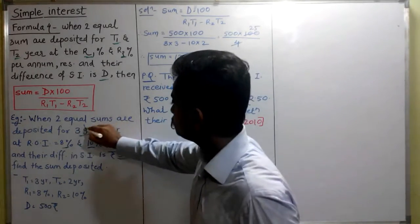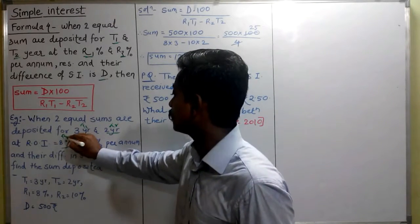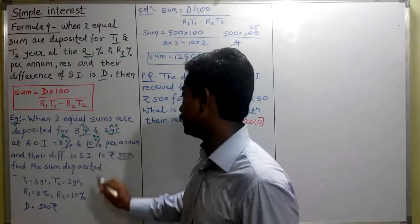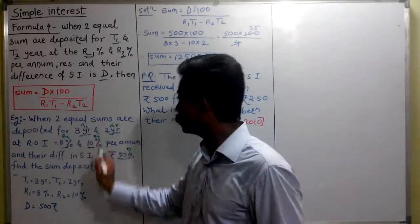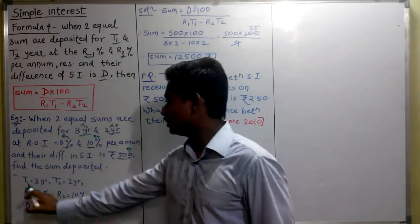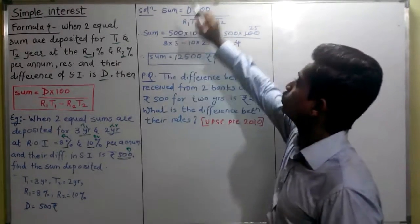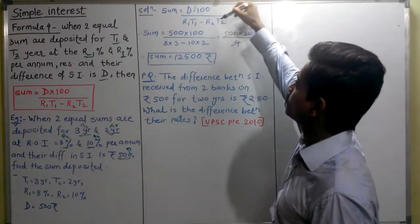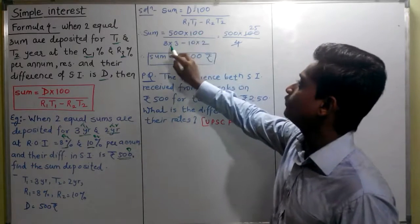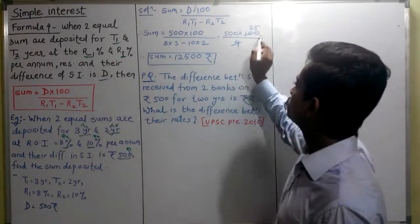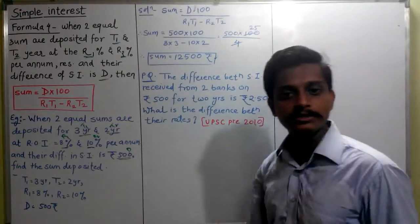What is given in the question? 3 years, 2 years, that is T1, T2. Rate of interest R1, R2. And difference in SI is D. So use this simple formula, put the values and get the answer. Sum is equal to D into 100 divided by (R1T1 minus R2T2). Therefore sum is equal to 500 into 100 divided by (8 into 3 minus 10 into 2). Substituting values, we get 12,500 rupees will be the sum.